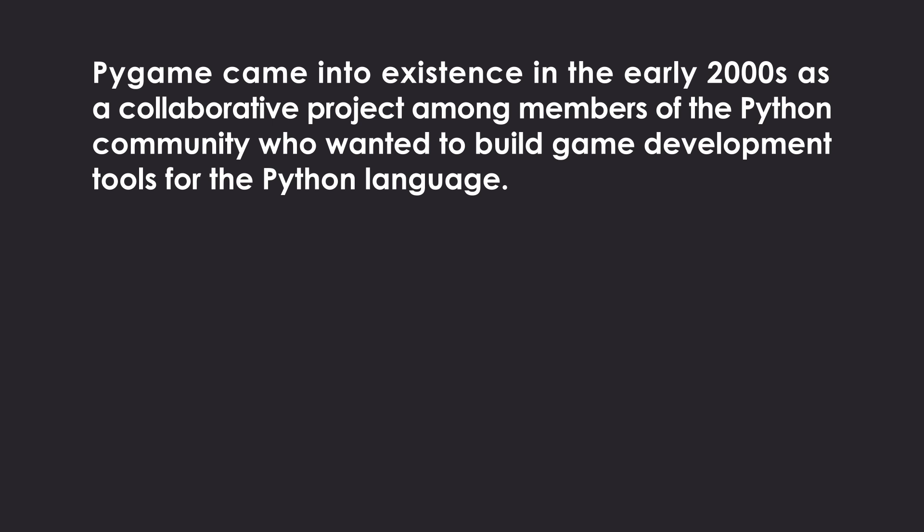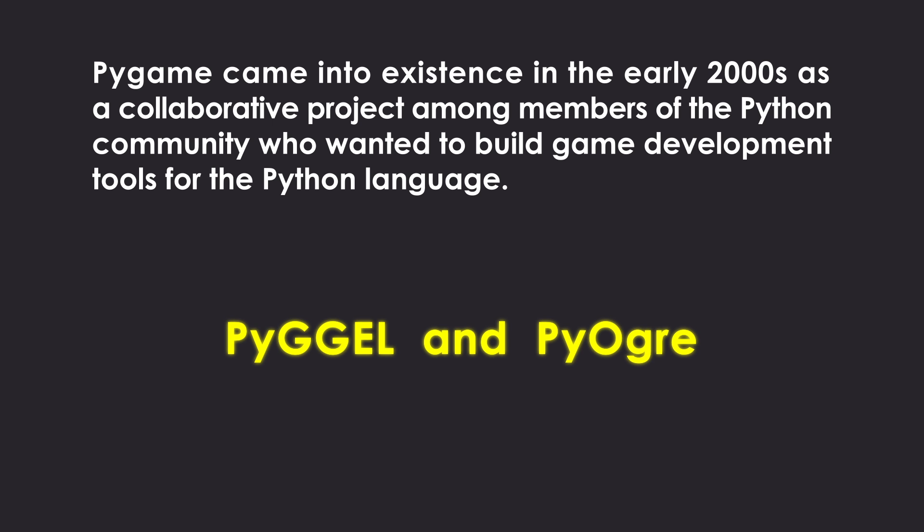Pygame came into existence in the early 2000s as a collaborative project among members of the Python community who wanted to build game development tools for the Python language. Pygame was inspired by other game engines such as PyGGEL and PyOgre, and it eventually became the go-to library for creating 2D games.